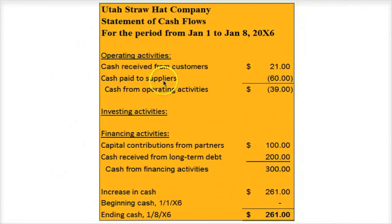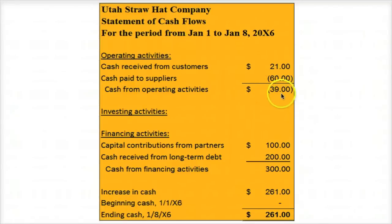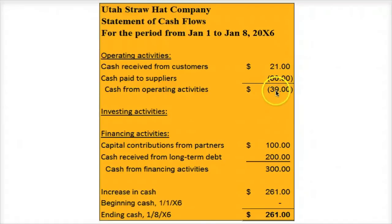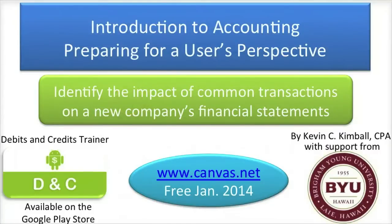Finally, we have the statement of cash flows. Actual cash received from customers was $21, but we've already paid our suppliers $60. So although the income statement showed positive net income, the actual cash flows from operating activities are negative $39. Luckily, we had borrowed money from the bank and had partners who contributed, so we haven't gone into a negative cash position yet. As we sell more goods, hopefully we'll generate positive cash flow from operating activities. What we've done is go through a bunch of transactions for a new business and shown the resulting impact on the balance sheet equation and financial statements.